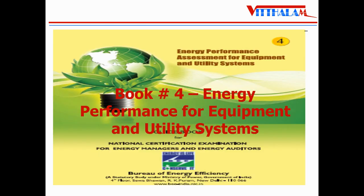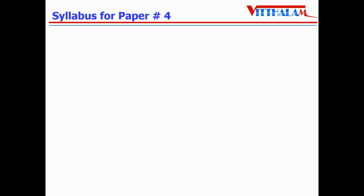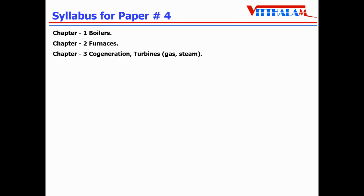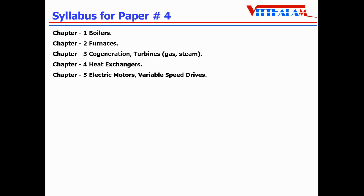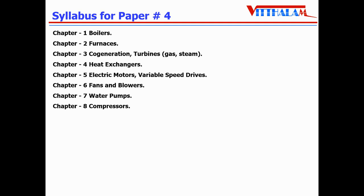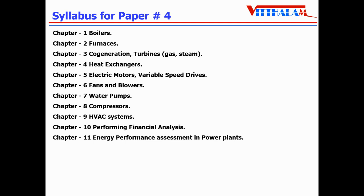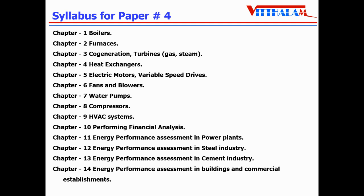Book number 4 is Energy Performance for Equipment and Utility Systems. Topics covered are: boilers, furnaces, co-generation turbines — gas and steam turbines — heat exchangers, electric motors, variable speed drives, fans and blowers, water pumps, compressors, HVAC systems, financial analysis, and energy performance in different industries: power plant, steel, cement, buildings and commercial establishments, and textile industry.